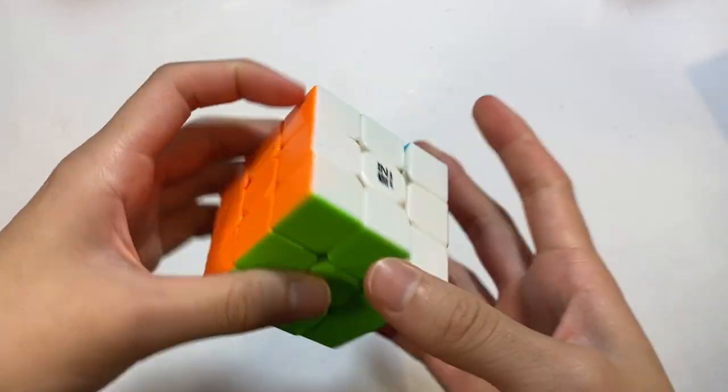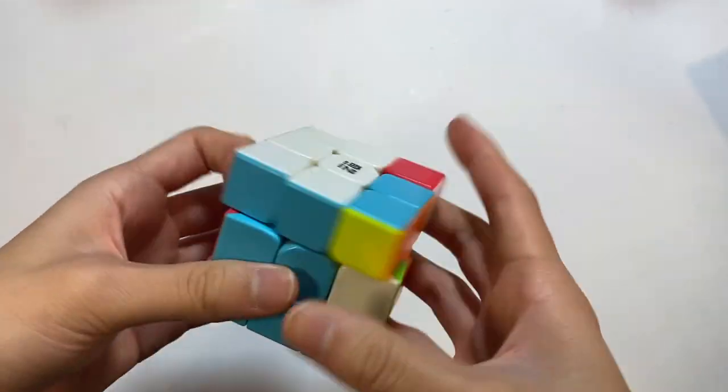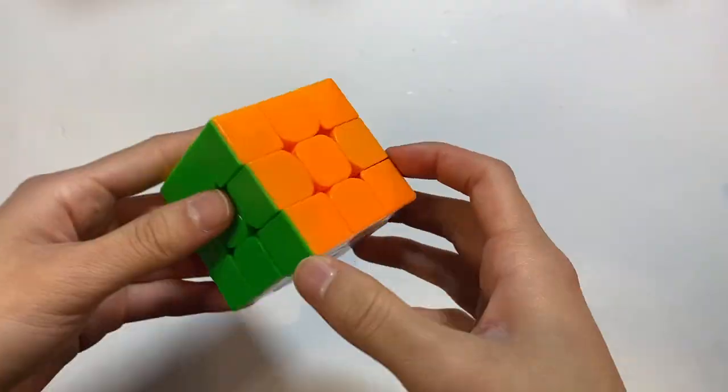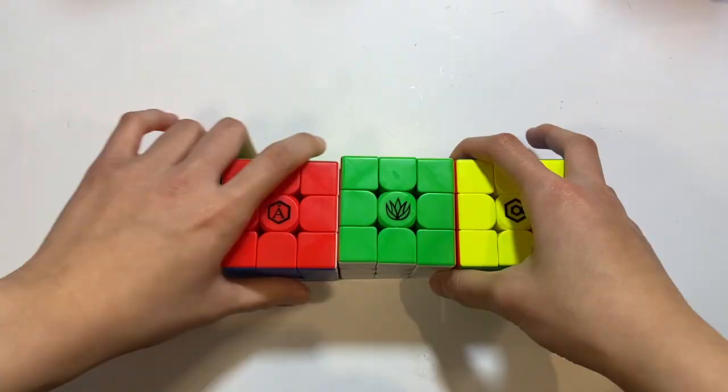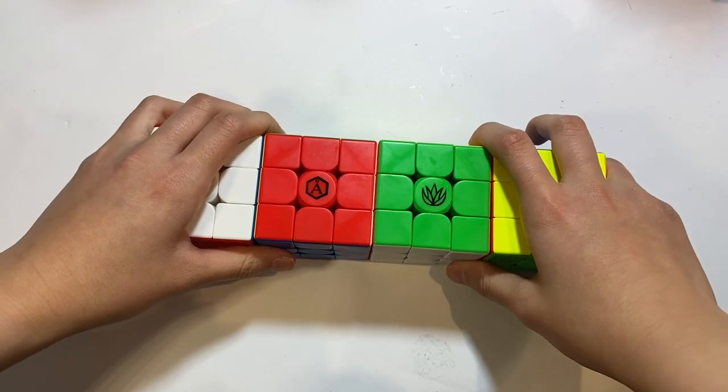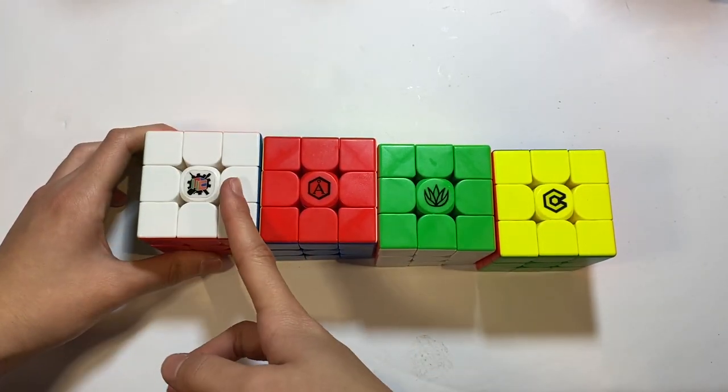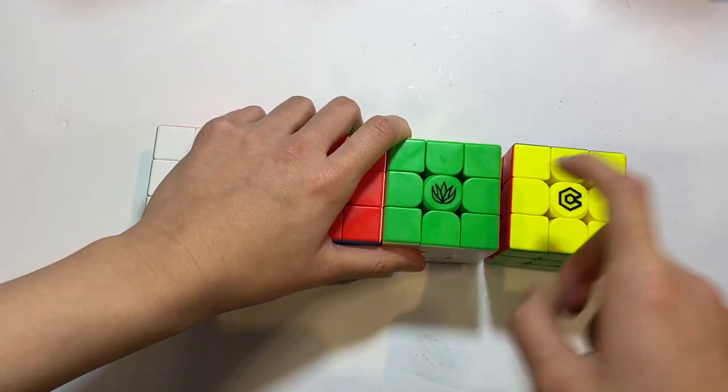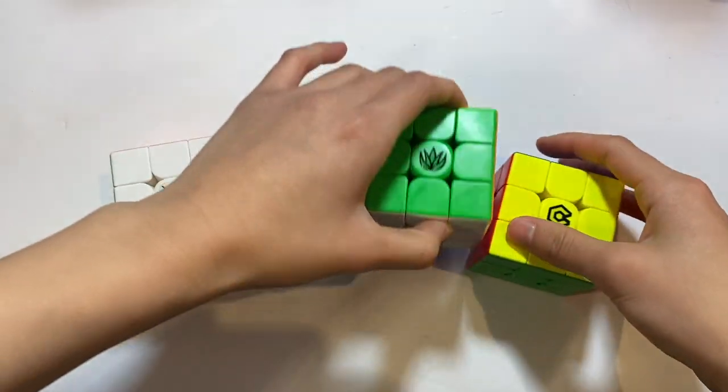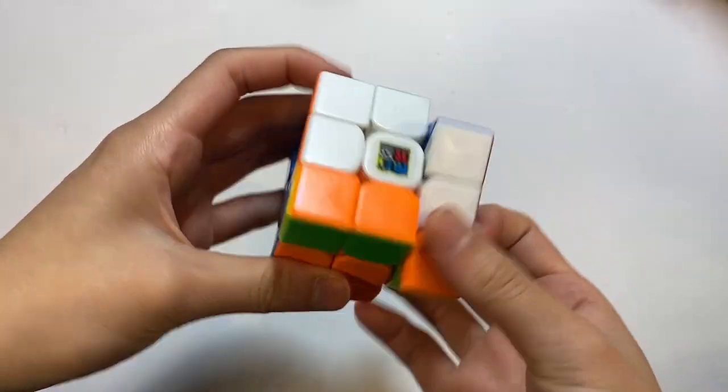Here is the Qi Warrior W 3x3. The Qi Sail W. The Yushin Little Magic. Here is the MFJS Mei Long 3x3. Here is a line of Mei Longs that I got. Here is just the cubicle Mei Long. The Angstrom Mei Long. The Mystic Mei Long and the Solaritas Mei Long. They're all magnetic by the way. The RS3M. The Repulsion 3x3.